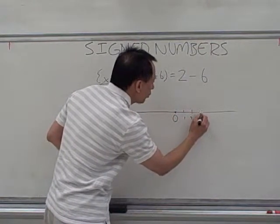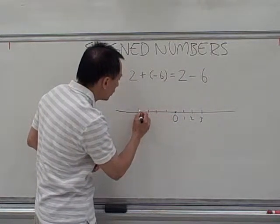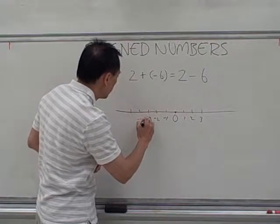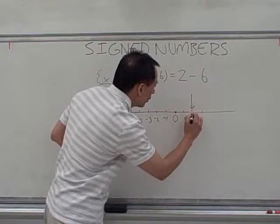Then I'm going to work on the real number line again. 0, 1, 2, 3 on the right-hand side. On the left-hand side of 0, we get the negatives. My starting point is 2. So I start right here.